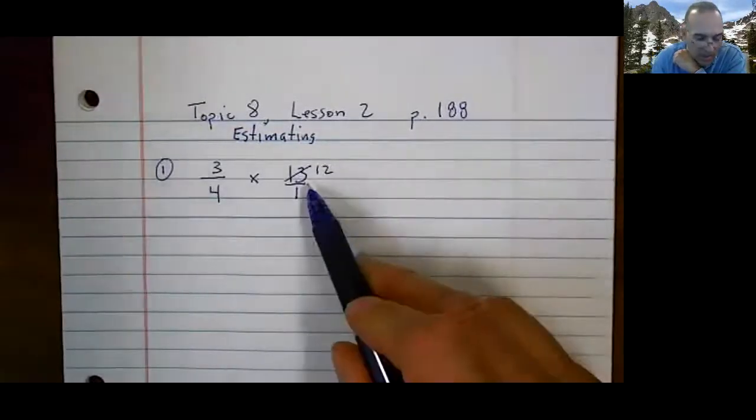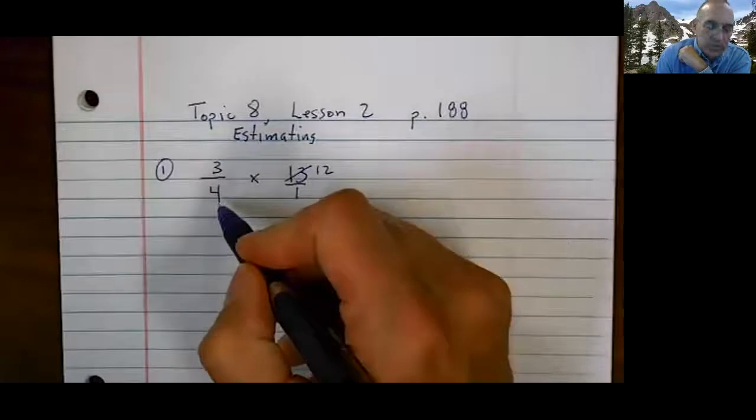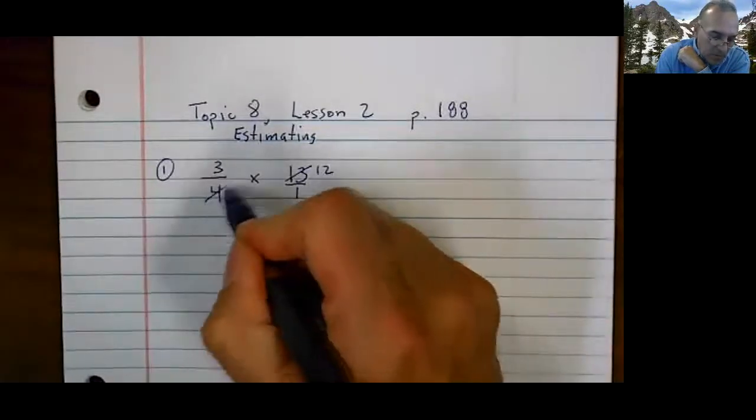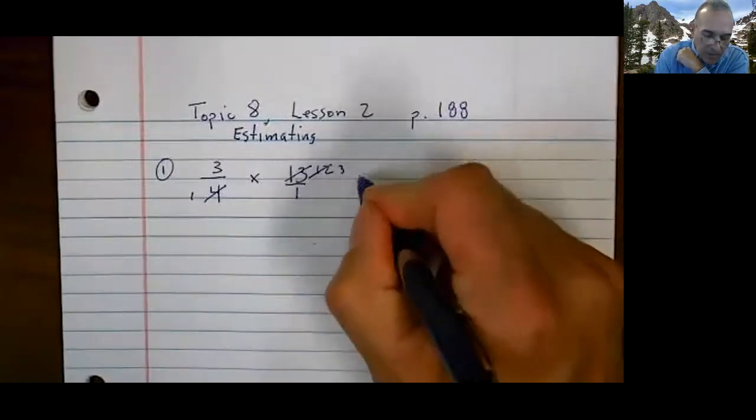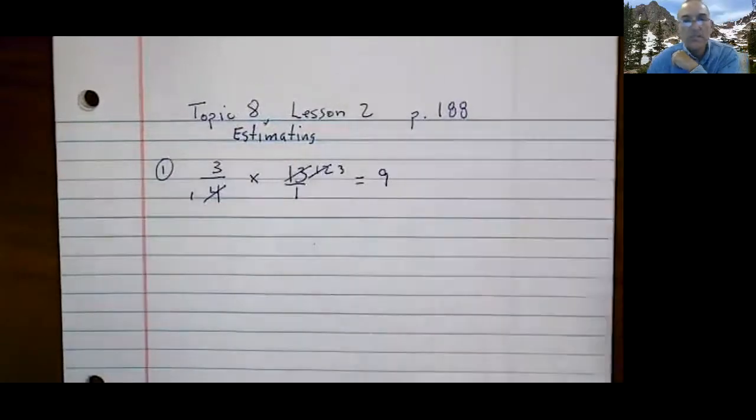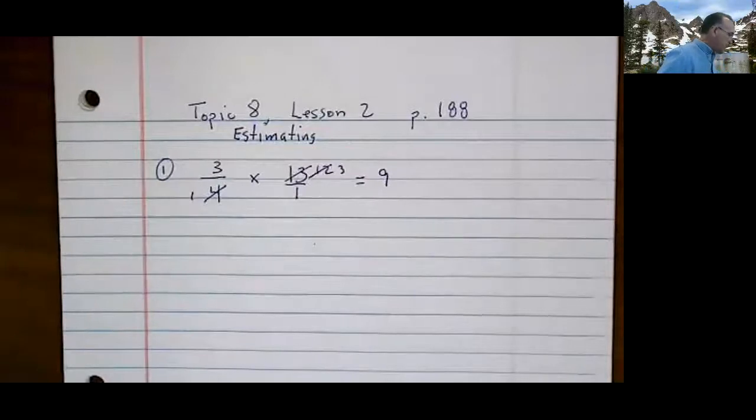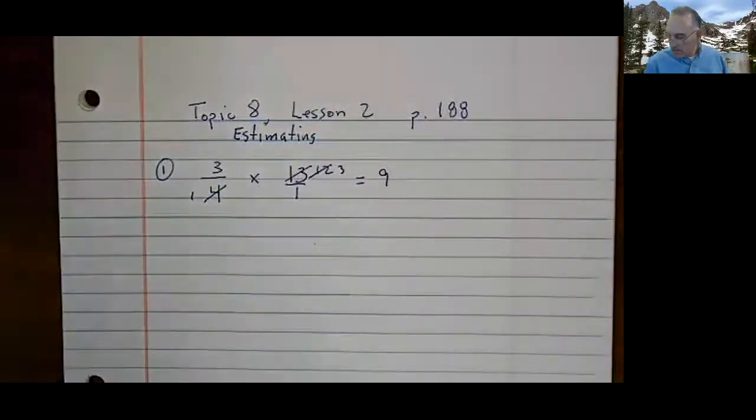If I were to make that number a 12, well, it's close to 13. Now I can go back to what I was doing before. 4 goes into 4 once. 4 goes into 12 three times. So my estimate could be 9. Let's do another one. Number 2.